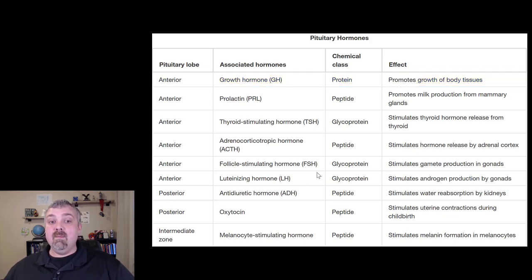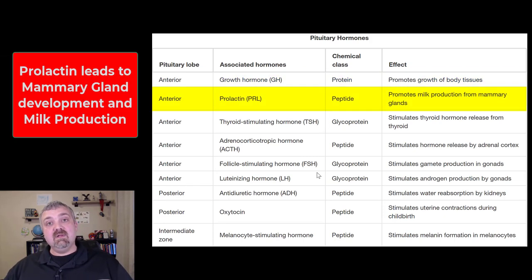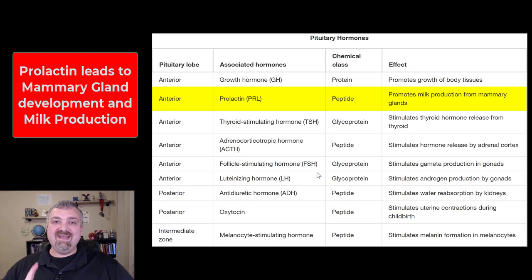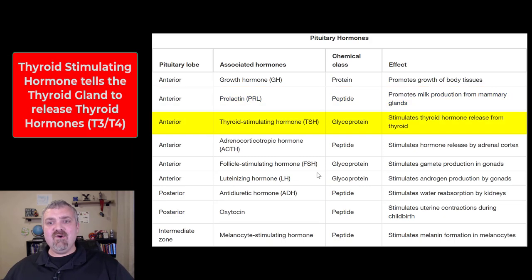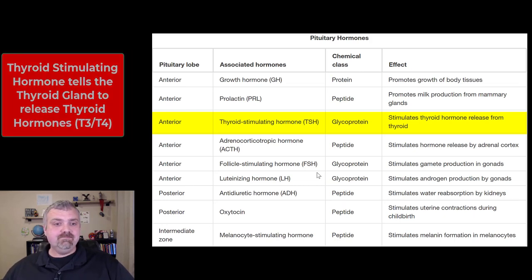The second pituitary hormone is prolactin. Prolactin is needed for the development of the mammary glands and the production of milk — but very importantly, not the ejection of milk. The letdown reflex is caused by oxytocin, which is later on this list. So prolactin: just remember development of the mammary glands and production of milk. Next we have thyroid stimulating hormone, which stimulates the thyroid gland to produce its thyroid hormones.